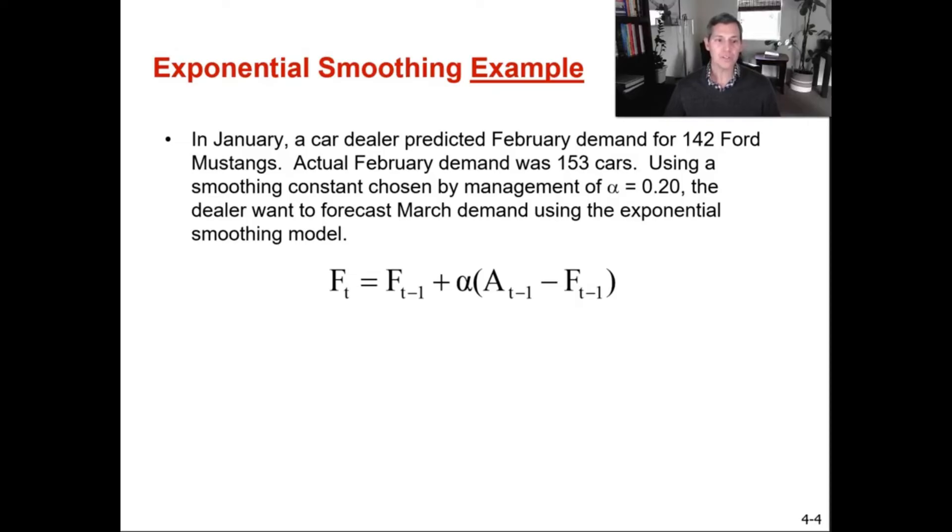Okay. So they have chosen an alpha of 0.2. So they are okay with it being pretty close to the average. What that tells me with the 0.2, where they want it to be smooth, they want it to be close to the average. Just looking at this with 142 Mustangs sold in January and then 153 sold in February, to me, that means they had a really great February. It was a little bit of an outlier. They don't want to start predicting demand to be closer to that 153. They feel like 142 is a safer or smarter forecast. So they're choosing a lower alpha.